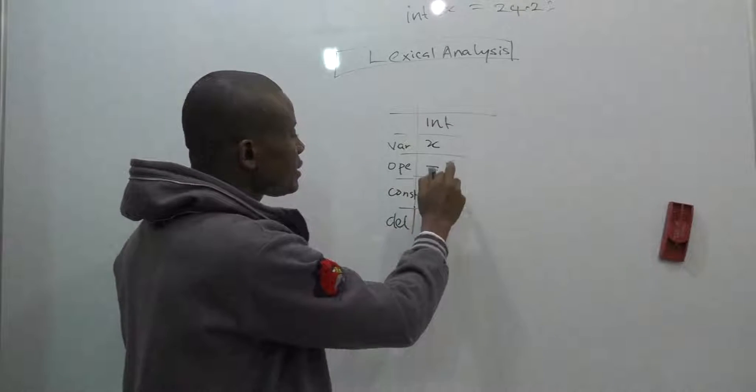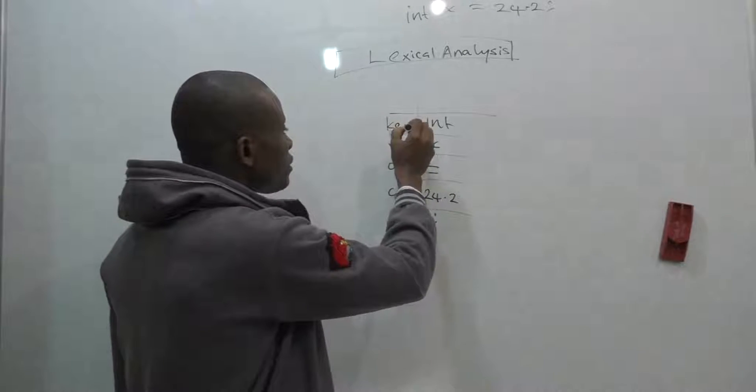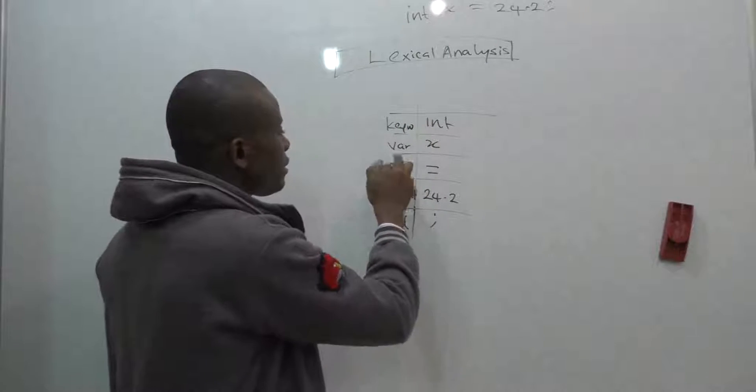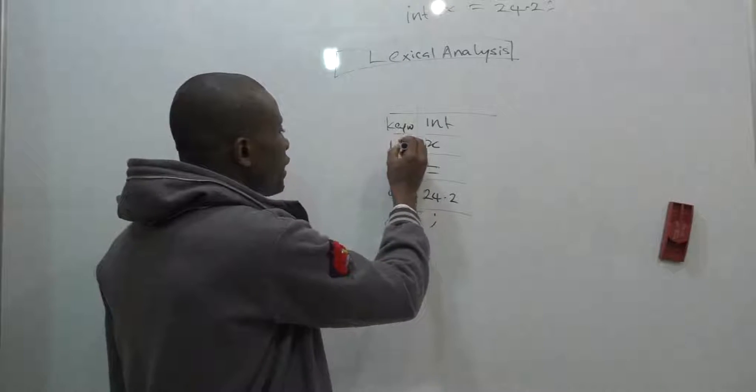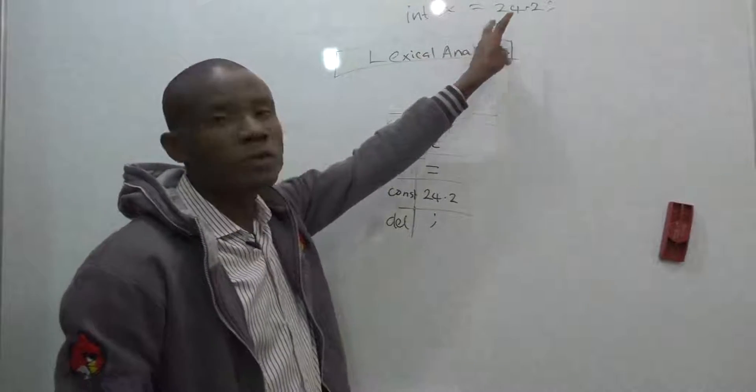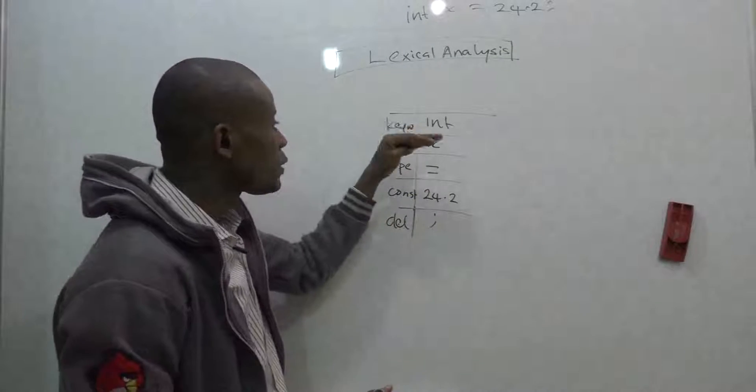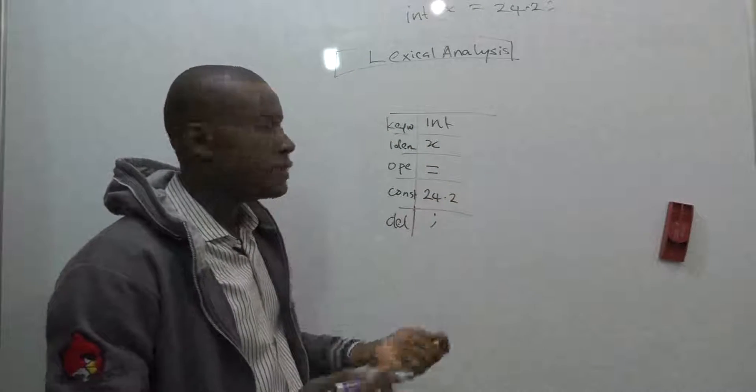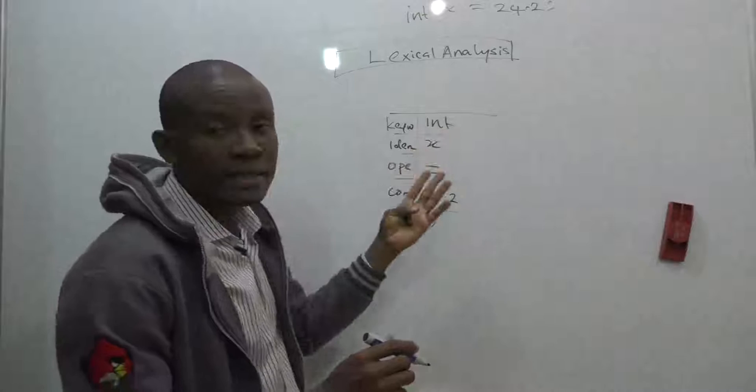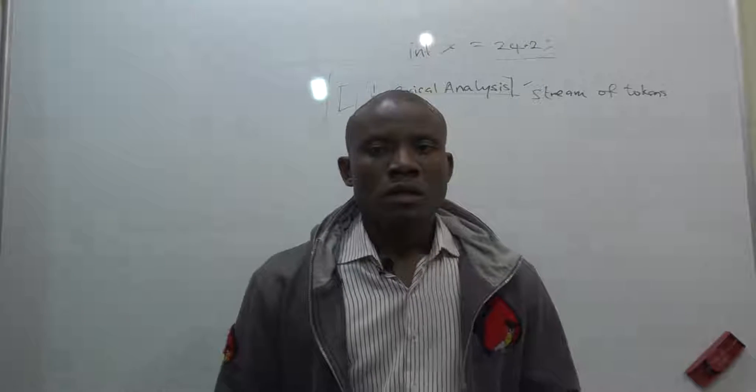If the lexical analysis stage is going to scan this, the output is going to be something like this. You have this symbol table with int, x, equals, 24.2. All the symbols in the input code are separated and placed inside appropriate sections in the symbol table. We have variable, operator, constant, and delimiter. It's going to separate them into these tokens that it understands. It doesn't care whether they make sense, but it is going to separate them.